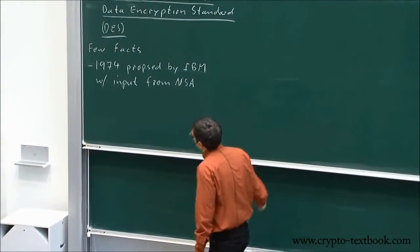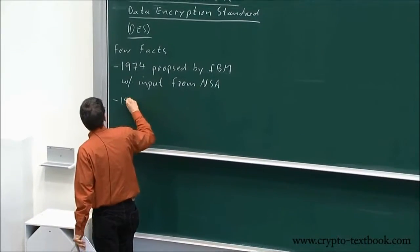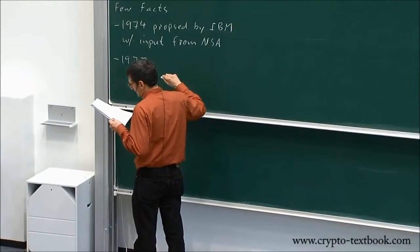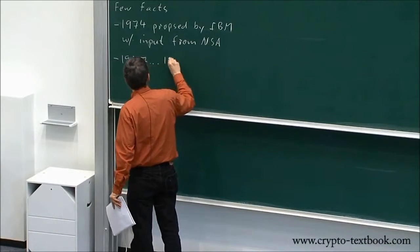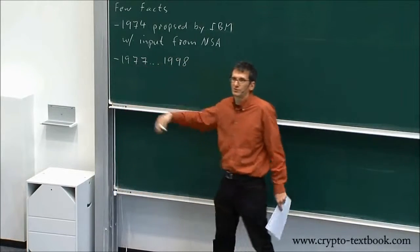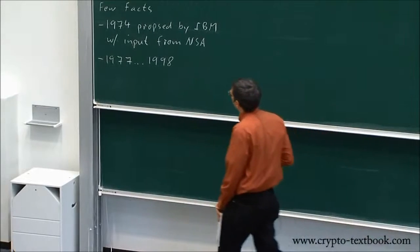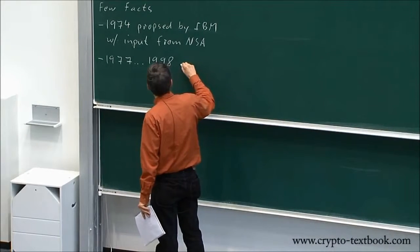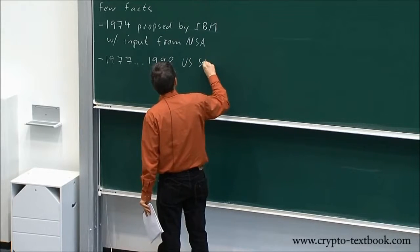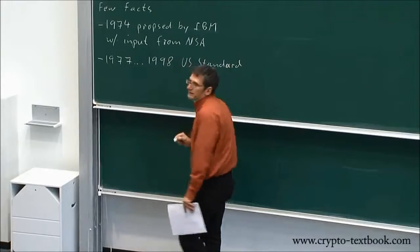So that happened originally in 1974, then a few years later, in 77, from 77 up till 98, within your lifetime, most of you were going to school at that point. The U.S. government made it a standard, and you have to be a little bit careful.